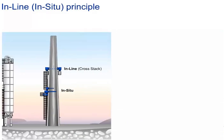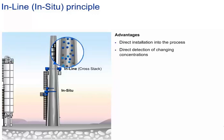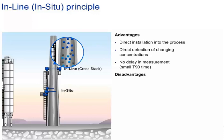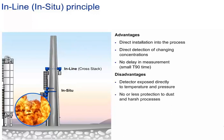Now we want to compare the methods of continuous measurement. The advantages of an in-line or in-situ measurement are: the equipment is installed directly at the process with no need for gas sample transport over longer distances, so changes in concentrations can be detected directly with no delay and only a small T90 time. But there are also some significant disadvantages: the detector is exposed directly to process conditions like temperature or high pressure, and there is no or less protection against dust and harsh process conditions.